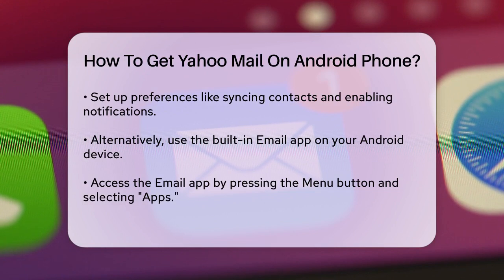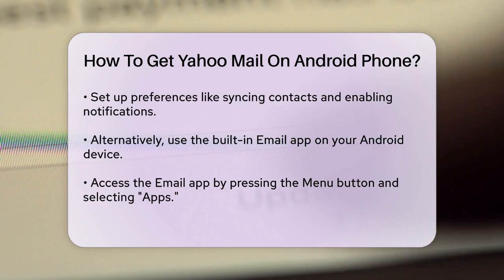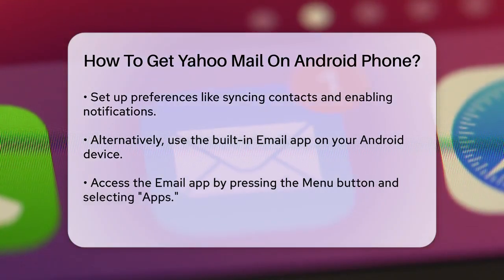If you prefer to use the built-in email app on your Android device instead of the Yahoo Mail app, you can also set up your Yahoo Mail account there. To do this, go to your home screen, press the Menu button, tap on Apps, and then select the Email app icon.